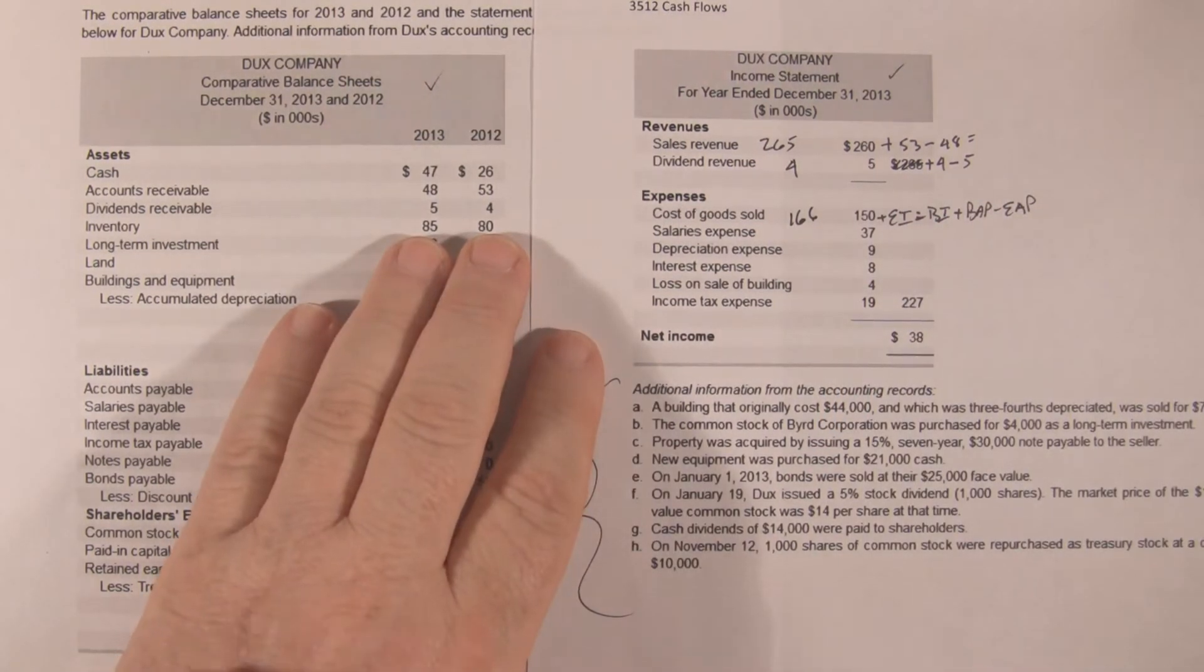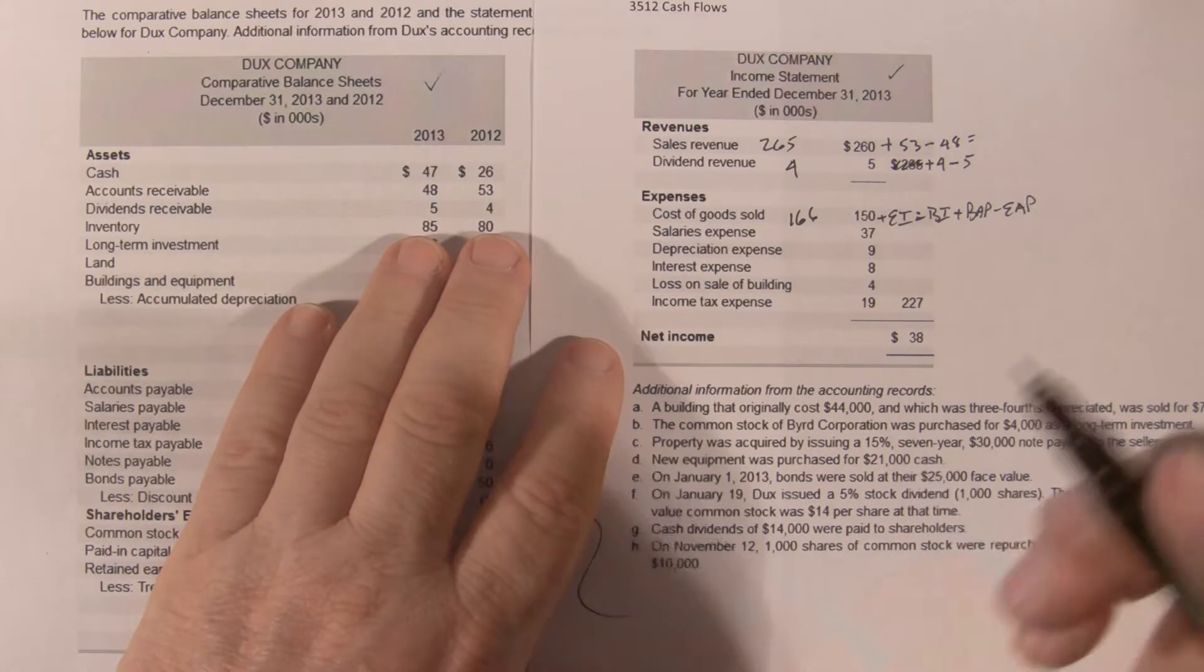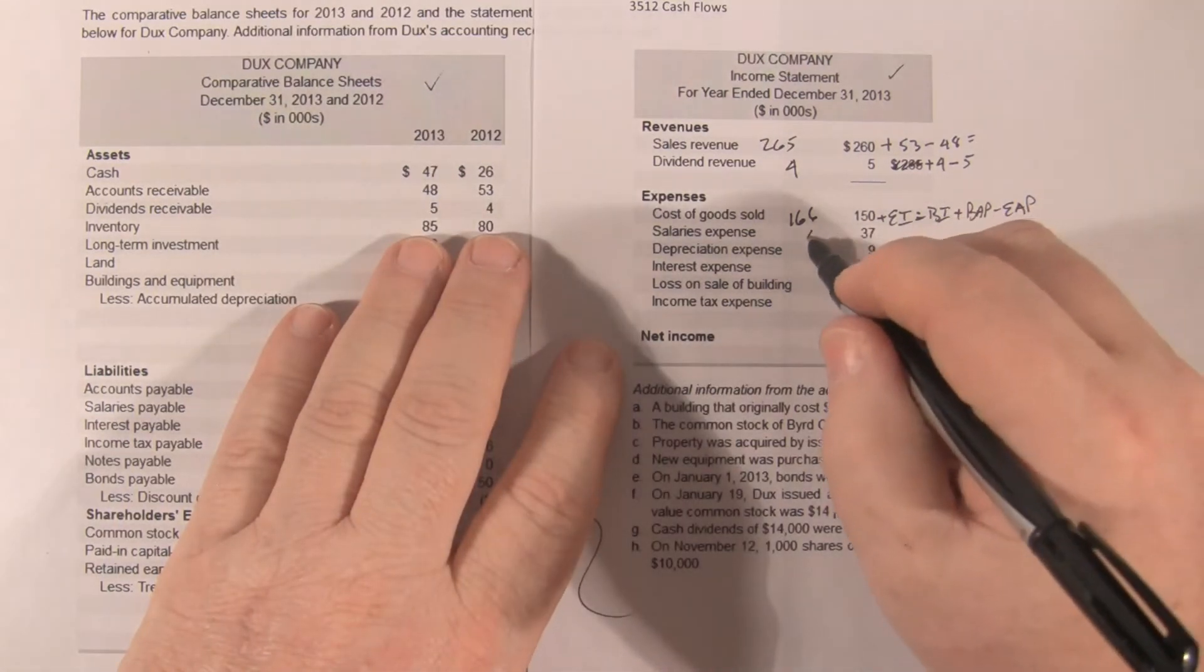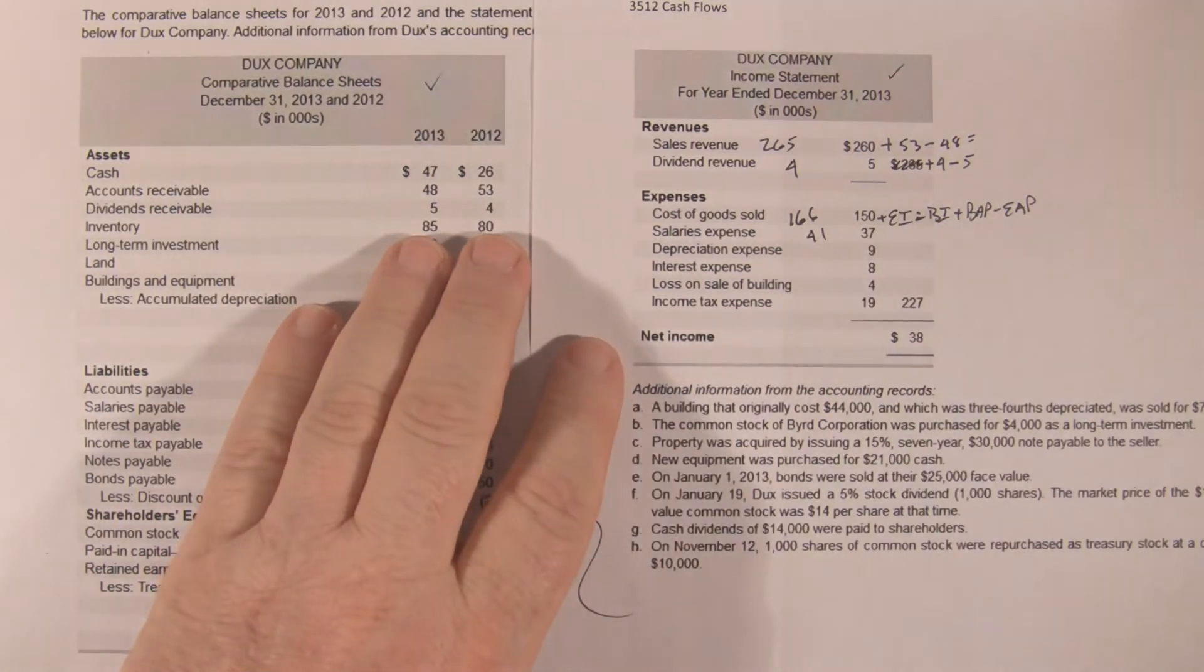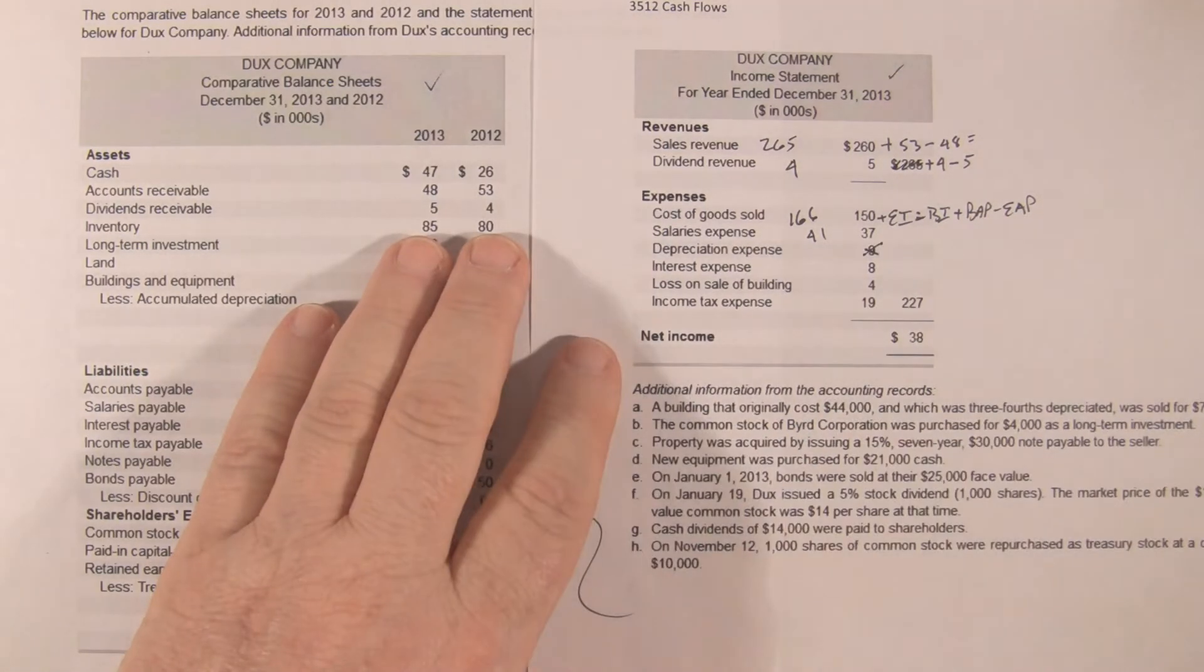Salary expense plus beginning salaries payable minus ending salaries payable gives us cash paid to salaries, 41. Depreciation, because this is the direct method, we can ignore.